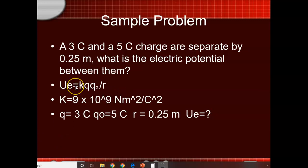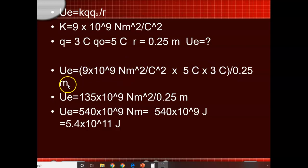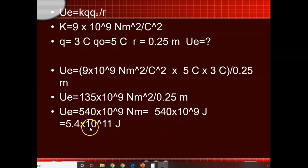We have the formula, Coulomb's constant, the charges, and we're looking for the electric potential energy. Electric potential energy equals Coulomb's constant times the product of the charges divided by the distance. So 9 × 10⁹ × 5 × 3 = 135 × 10⁹ N·m², divided by 0.25. That gives 540 × 10⁹ N·m. A newton-meter is a joule, so 540 × 10⁹ joules = 5.4 × 10¹¹ joules. This is the electric potential energy — the energy stored at that location.